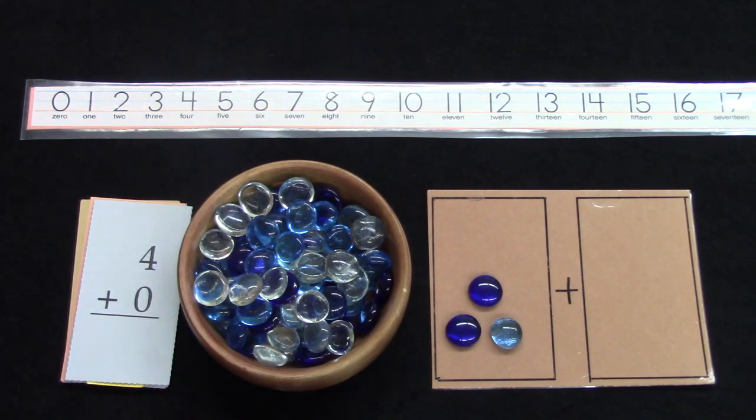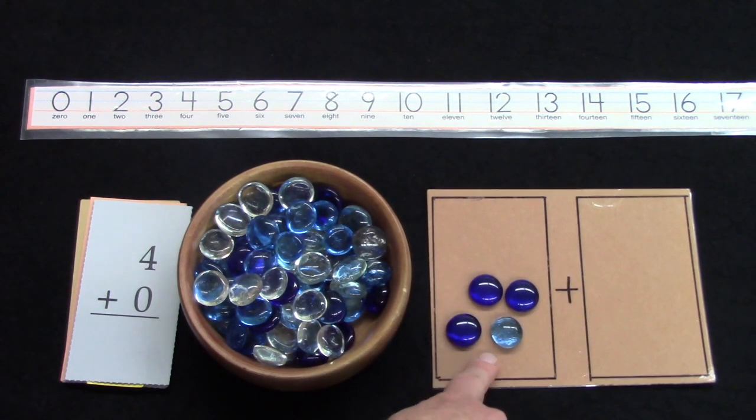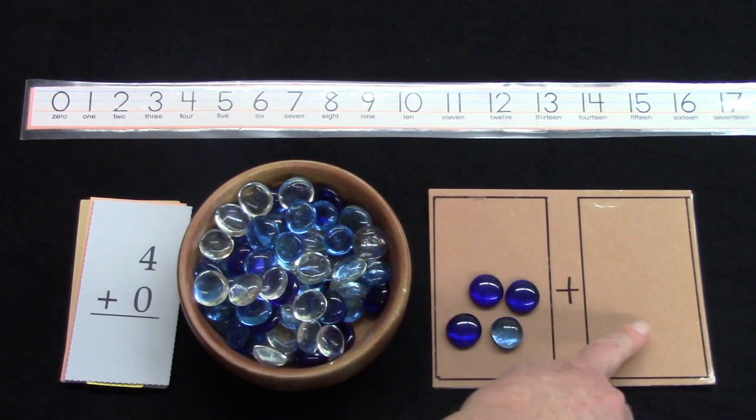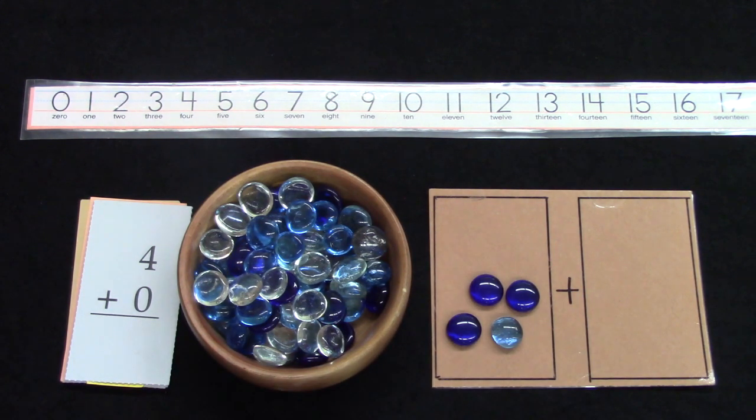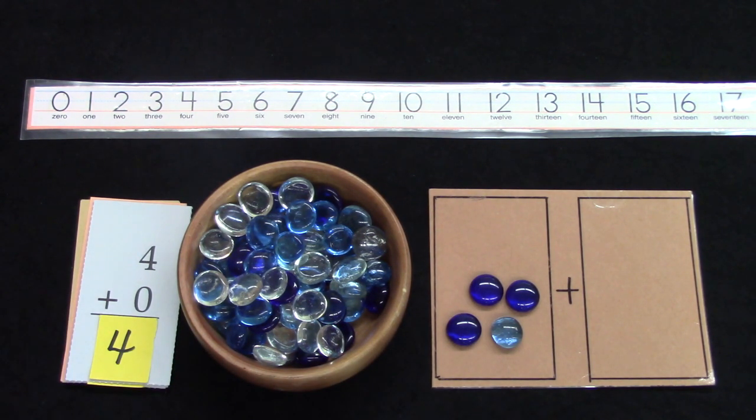What about four plus zero? I'll put another gem on this side. We have four plus nothing. We're not going to add anything to it. So four plus zero is four.